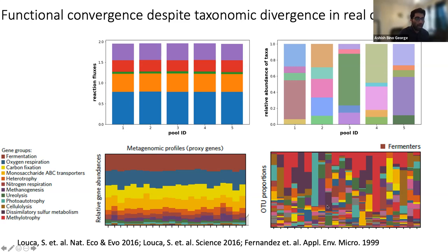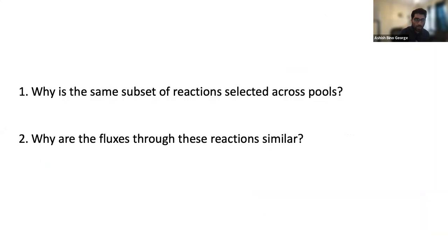This functional convergence despite taxonomic divergence that we see in simulations resembles observations in many natural and industrial microbial communities. For example, communities growing in waterlogged pitcher plants show that functional abundance — quantified by the relative abundance of functional genes — converges, but communities differ in taxonomic composition between each plant.